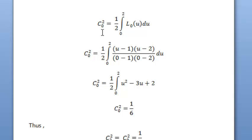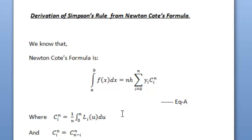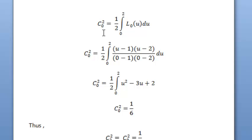Now, c₀₂ equals 1/2 times the integral from 0 to 2 of l₀(u) du. This can be calculated using the previous formula. We expand l₀(u) as (u minus 1)(u minus 2) divided by (0 minus 1)(0 minus 2), and integrating with respect to u we get the value of c₀₂ equals 1/6.